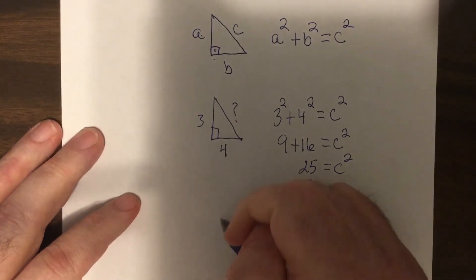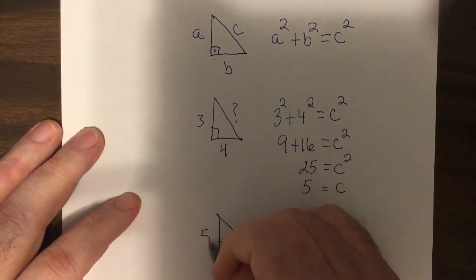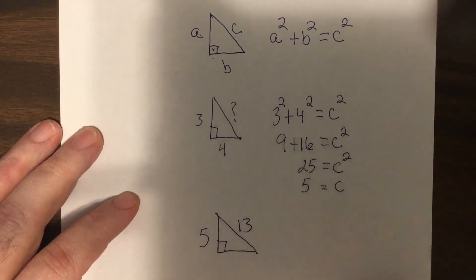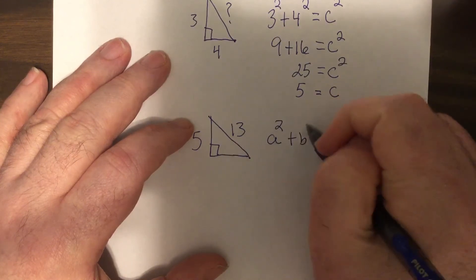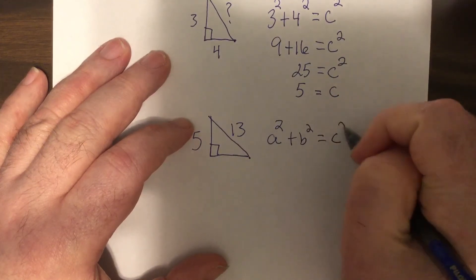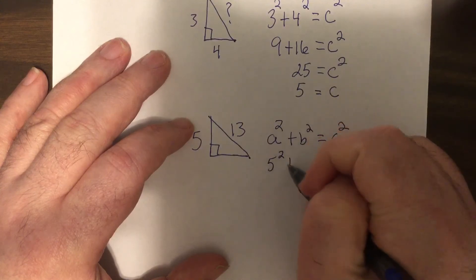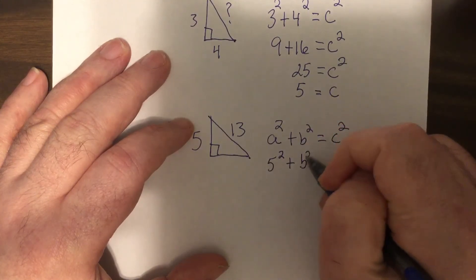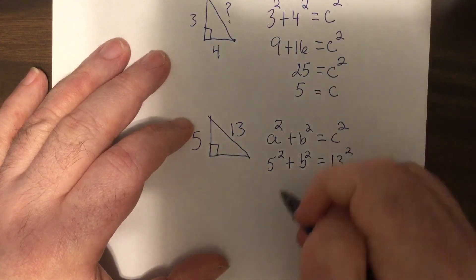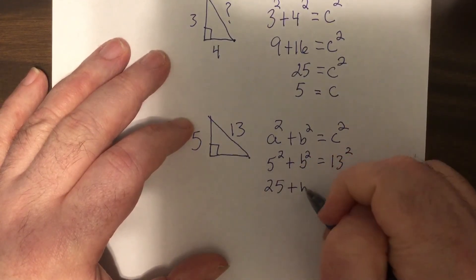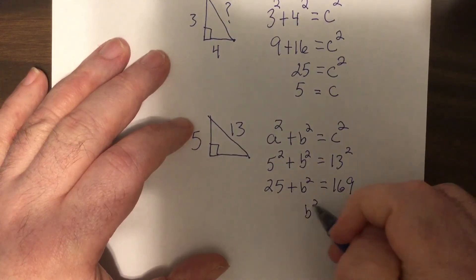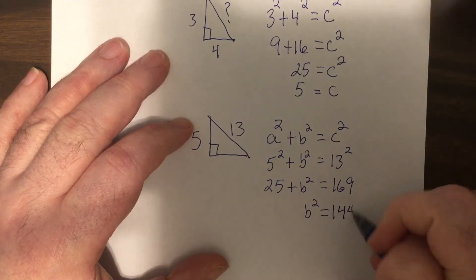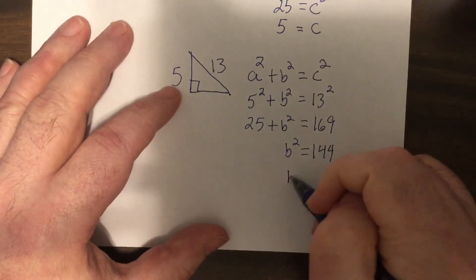If I said, let's say this is 5 and this is 13. You'd say, a squared plus b squared equals c squared. So 5 squared plus b squared equals 13 squared. So 25 plus b squared equals 169. B squared equals 144, so b equals 12.